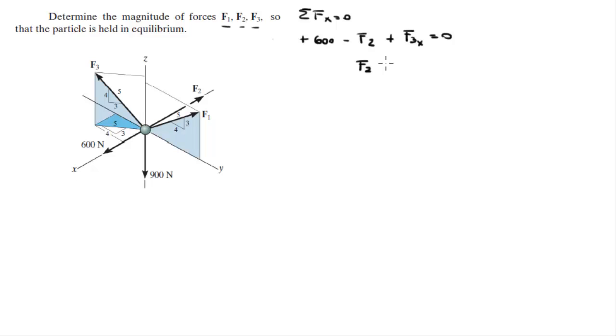Now, the X component of F3 can be found by first finding this projection right here. That projection, the F3 projection in the X and Y, is equal to 3 over 5 times F3, according to this triangle, which equals 0.6F3. And that projection, multiplying by again 3 over 5 times 3 over 5, gives you the X component of F3, which comes out to be 0.36F3.